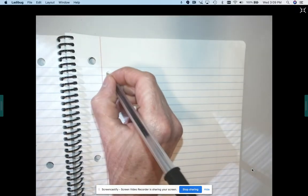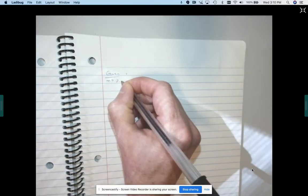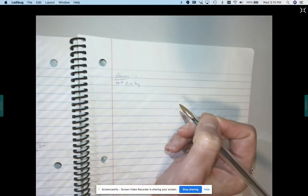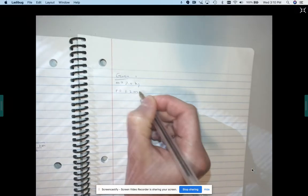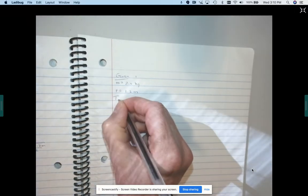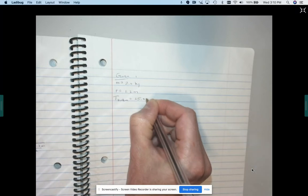So we are given that the mass is 2 kilograms. We are given the radius of the circle is 1.2 meters. We are given the tension at the bottom is 25 newtons.